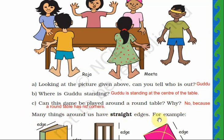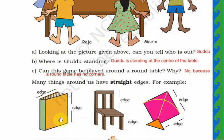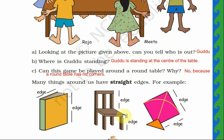Many things around us have straight edges. For example, a book has straight edges — this side is one edge, here is another edge, and so on. These are straight edges, meaning they are in a straight line, not curved. A chair also has straight edges. And a kite also has straight edges — you can see all its edges are straight.